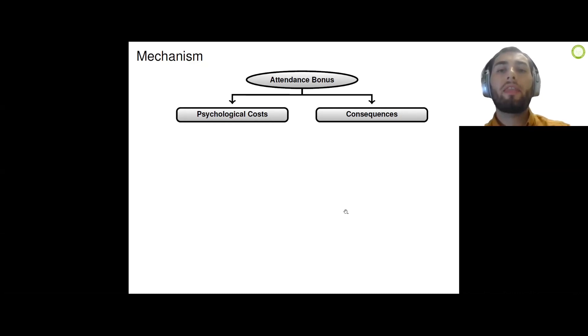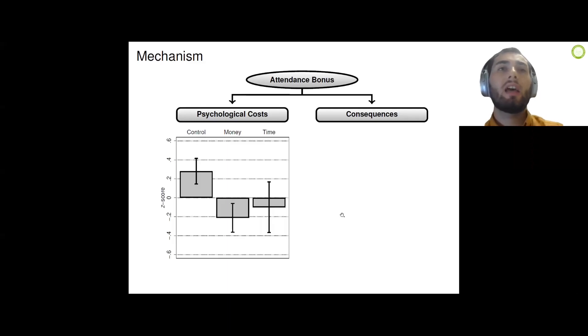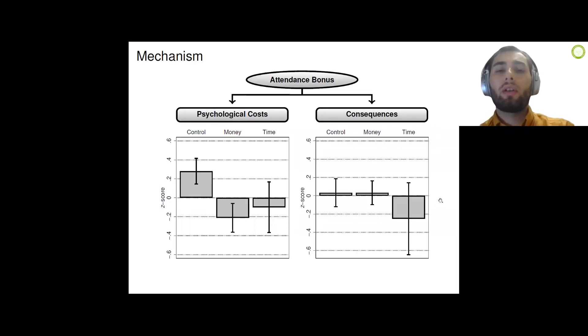We find that the psychological cost index differs significantly between treatment groups. In particular, we see that the psychological cost index among the surveyed apprentices receiving the monetary bonus is around half a standard deviation lower than among the surveyed apprentices in the control group. However, we find no corresponding effect in the perceived likelihood of the consequences. We therefore deem the psychological costs of absenteeism as the decisive mechanism.